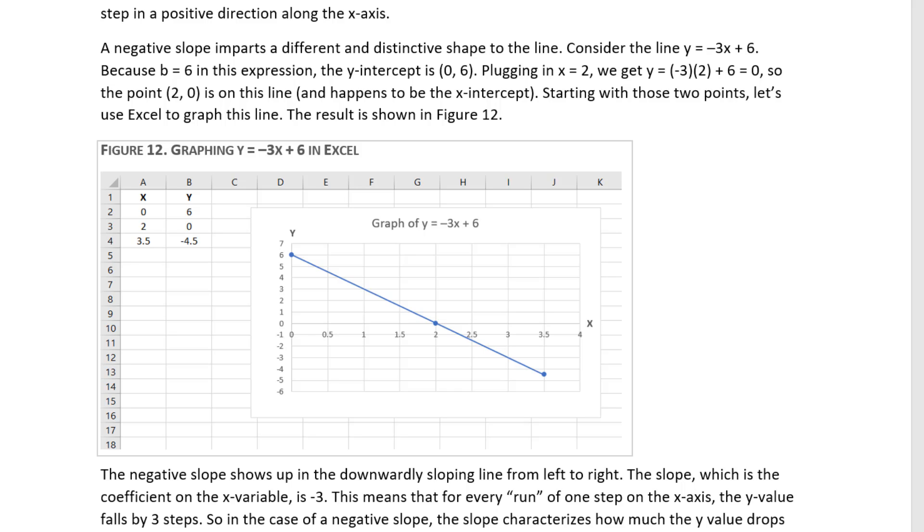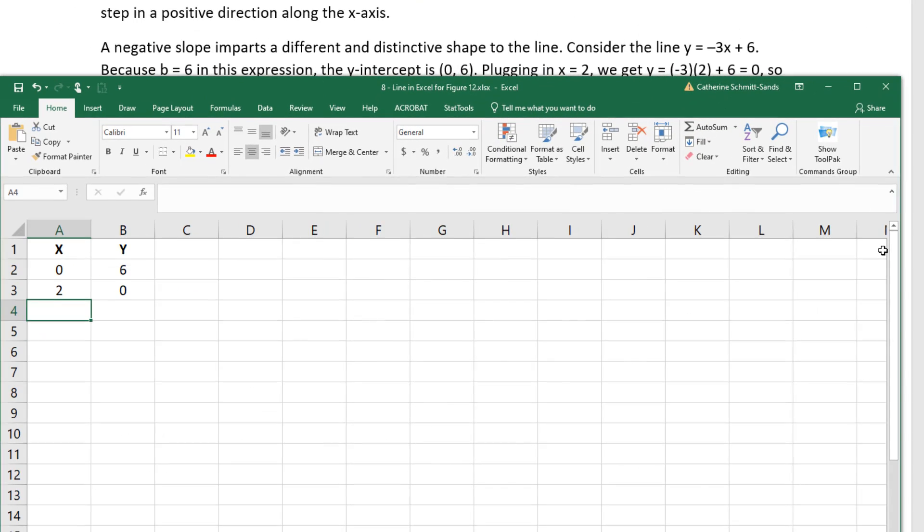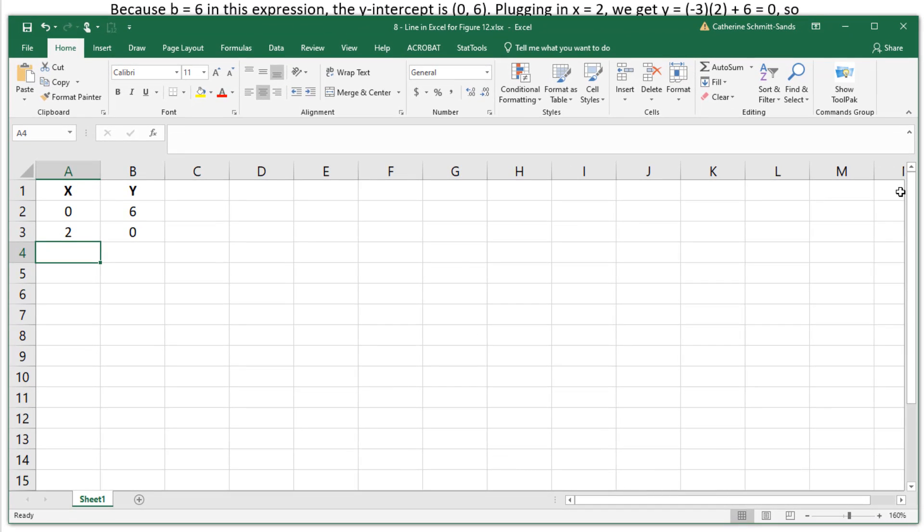Starting with those two points, let's use Excel to graph this line. Now Excel can graph a line given only two points, but doing a scatterplot with only two creates a situation in which Excel is not sure what you want to graph. So we are going to get around that by calculating a third point on this line. Given that third point, Excel will not get confused, plus you will get more practice with Excel.